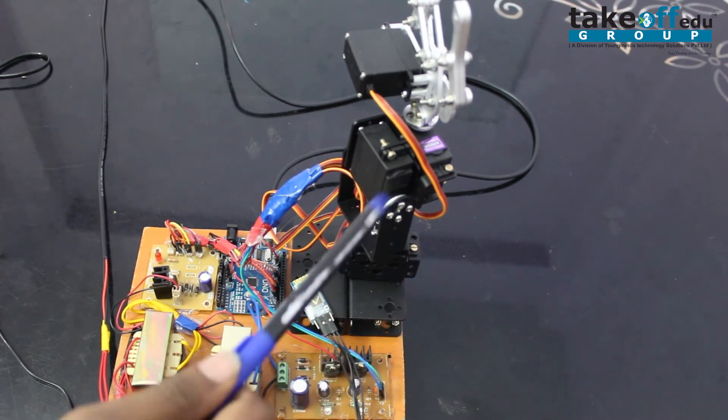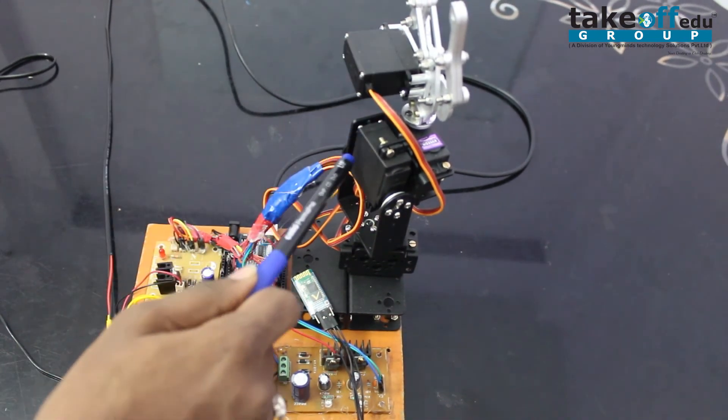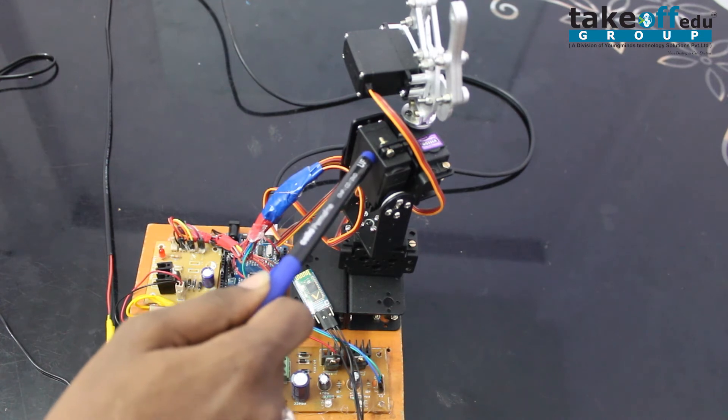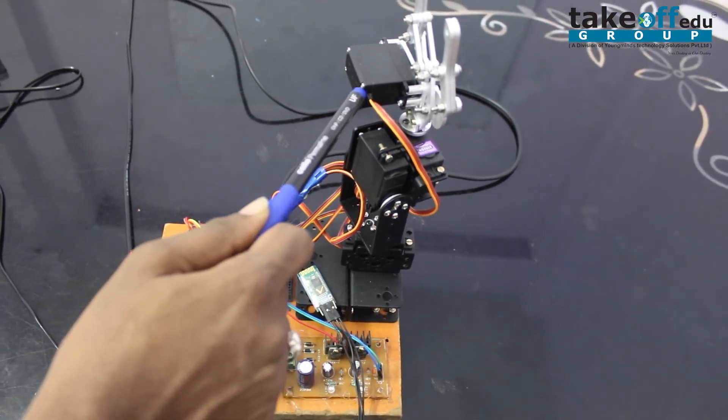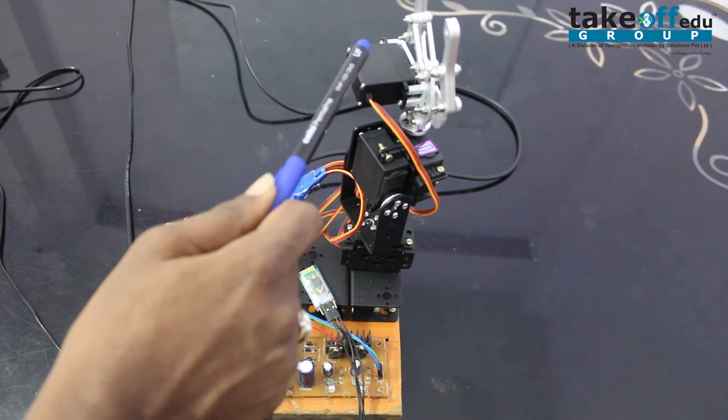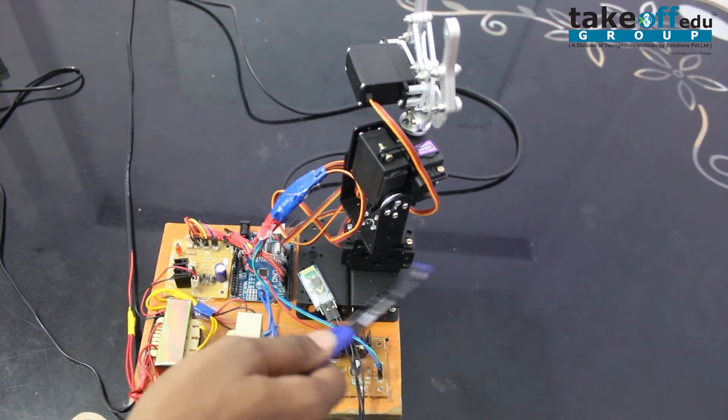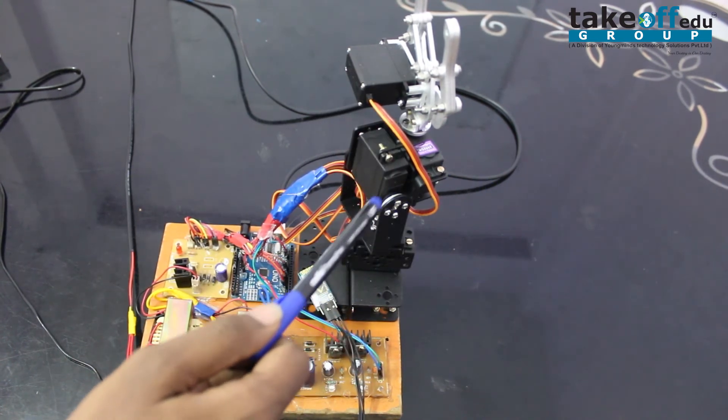And next, servo motors. These are the servo motors for controlling this robotic arm. Here, we are using four servo motors: one, two, three, four. These four servo motors control this arm.